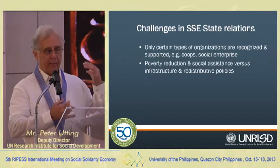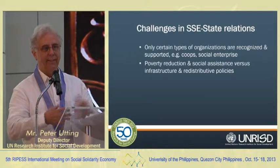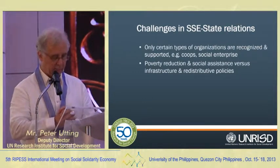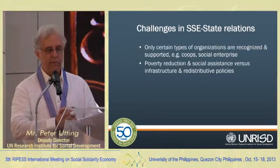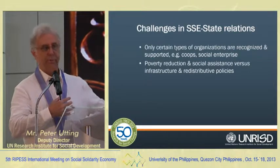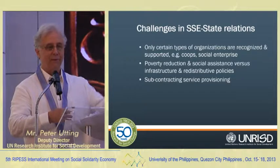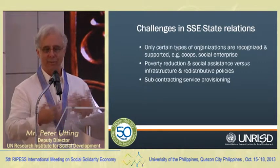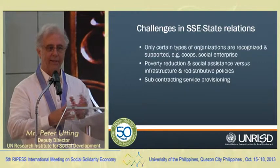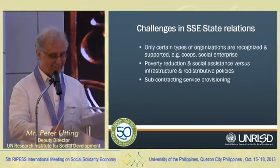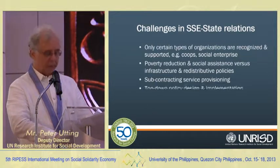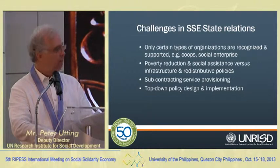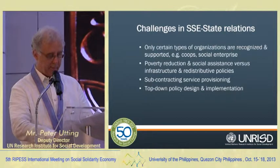Governments need to think about the infrastructure SSE workers need, redistributive policies, whether fiscal or land reform — it's more than just poverty reduction. Another tension is where governments use SSE organizations to subcontract out their responsibilities for providing social services. Many believe decent social services should be the responsibility of the public sector, and there's concern about farming out those responsibilities to SSE. There are also problems of top-down policy design, lack of effective participation of social and solidarity economy actors in designing and implementing policies.